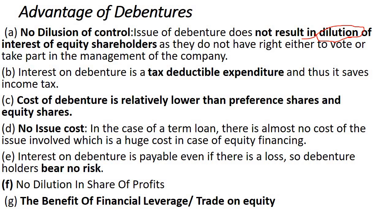The cost of debentures is relatively lower than that of preference shares and equity shares. The dividend rate on preference shares is always higher than the interest rate on debentures. There is also no significant issue cost for debentures, unlike equity and preference shares where costs such as underwriting costs and registration costs are involved.